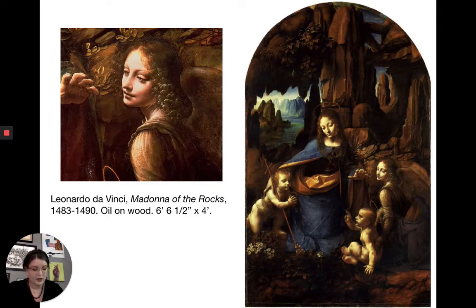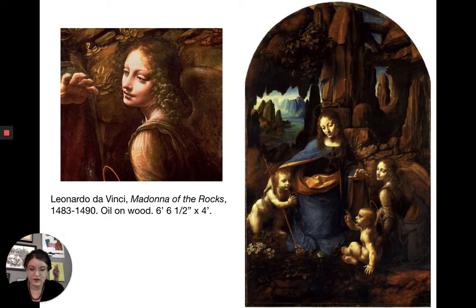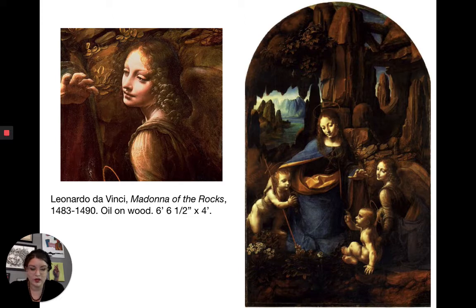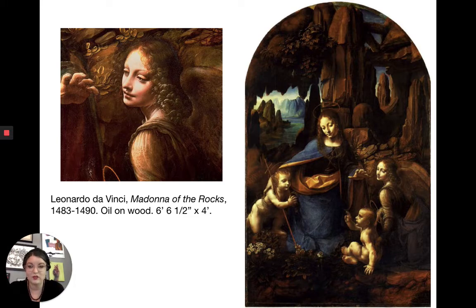Leonardo believed — and it's recorded in his notebooks — that his scientific studies made him a better painter. This was a fairly new idea: looking directly to anatomy and to the natural human form for inspiration. From his Treatise on Painting, he writes: 'Painting is a matter of greater mental analysis, of greater skill and more marvelous than sculpture, since necessity compels the mind of a painter to transform itself into the very mind of nature, to become an interpreter between nature and art.'